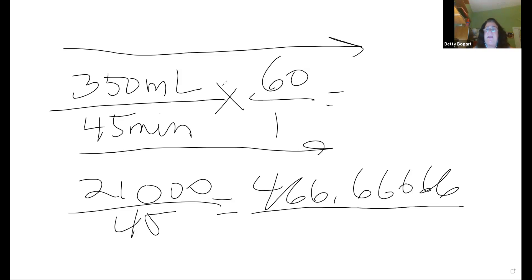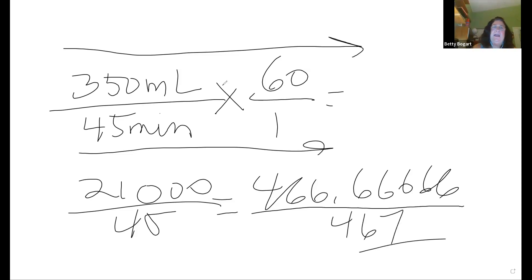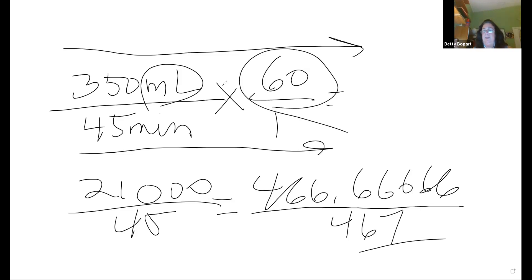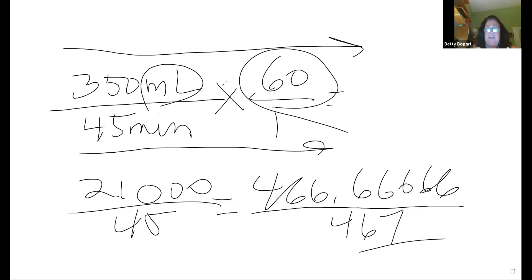So the answer is 467 mLs per hour. Now you see how mLs per hour differs from a heparin or insulin dose — for any dose you want to give, you'll see mLs left. Any dose you put in using DHQ will leave mLs as the unit.